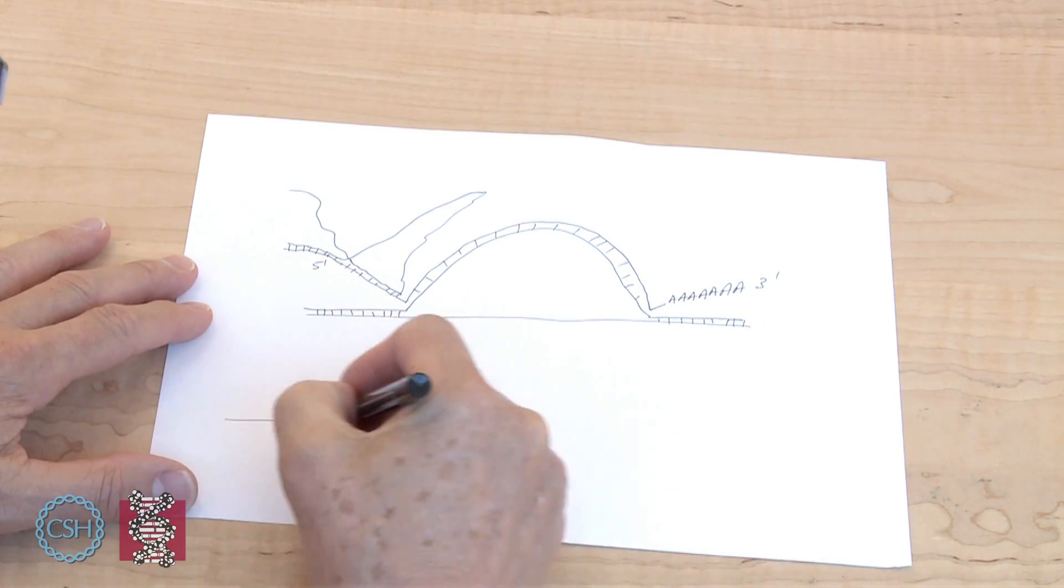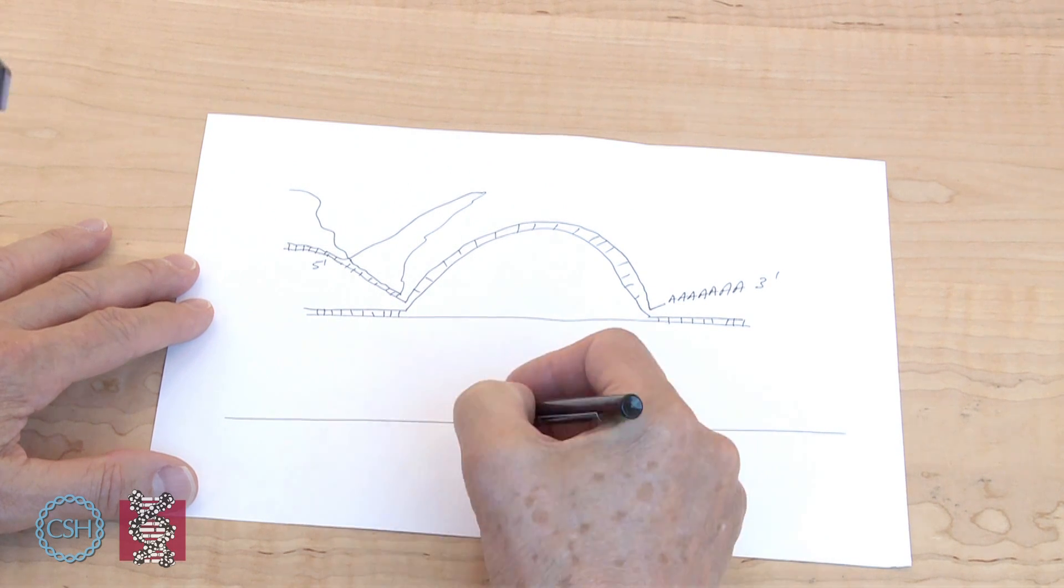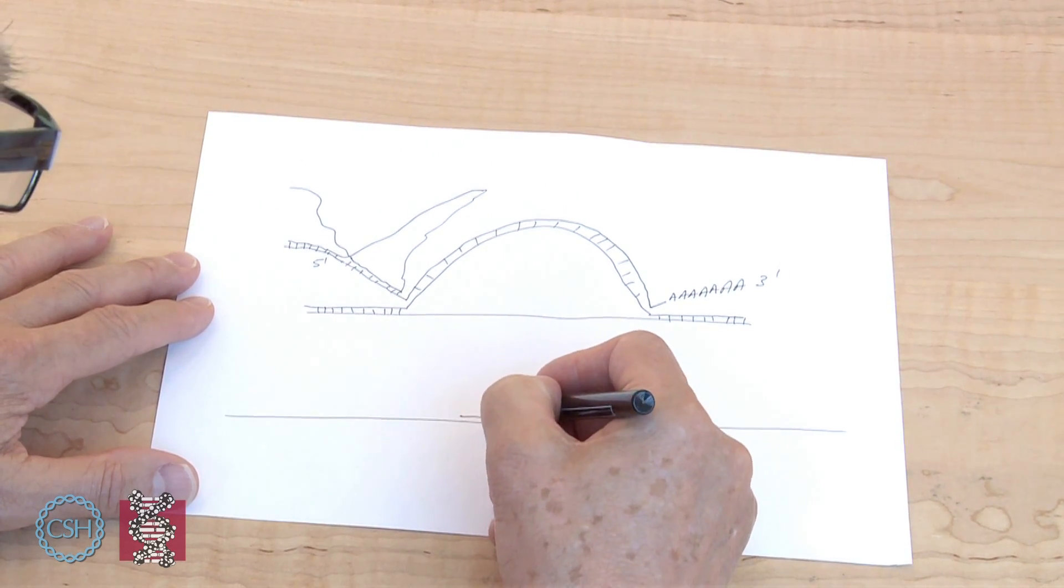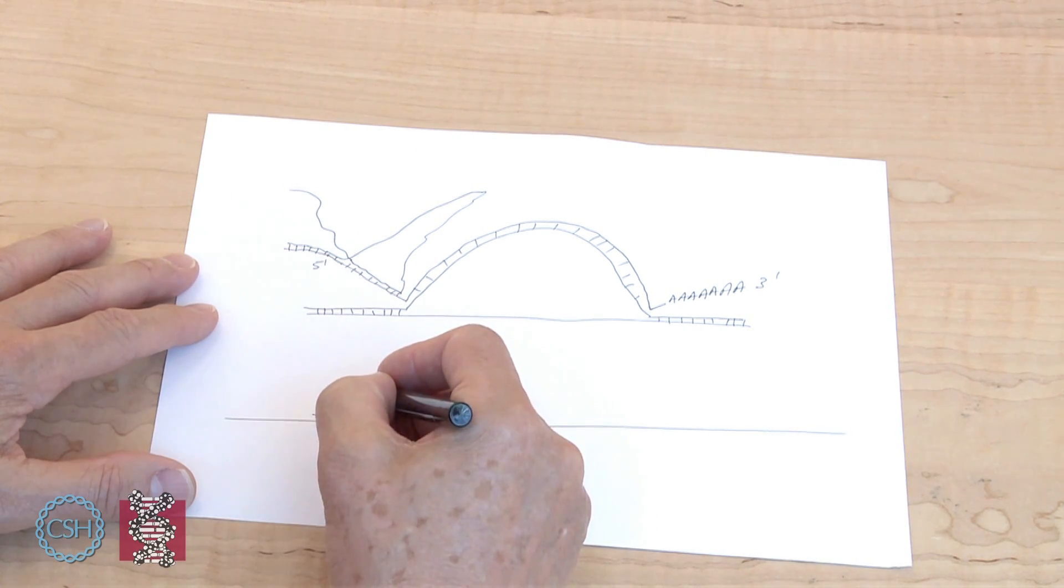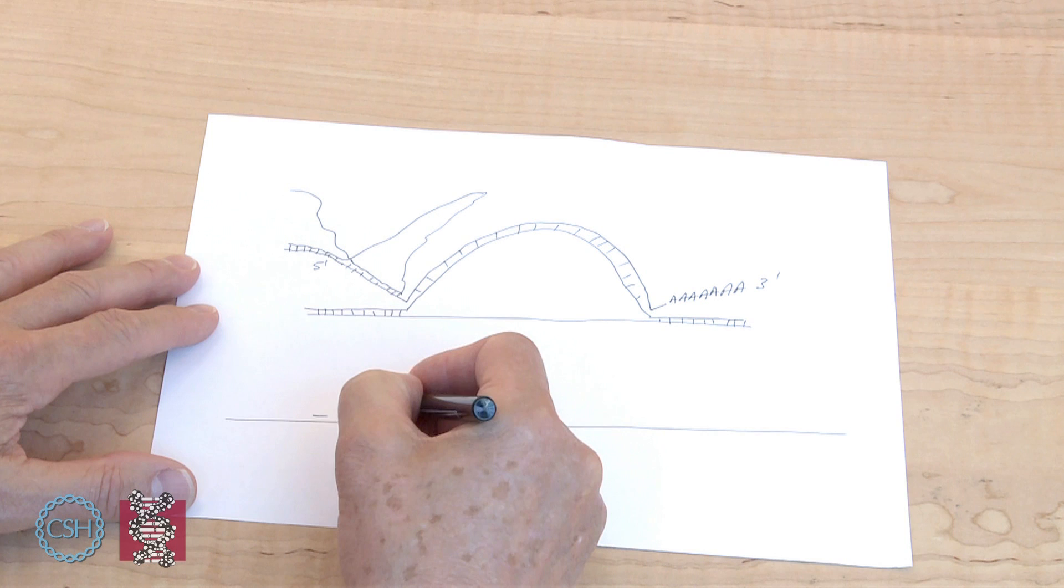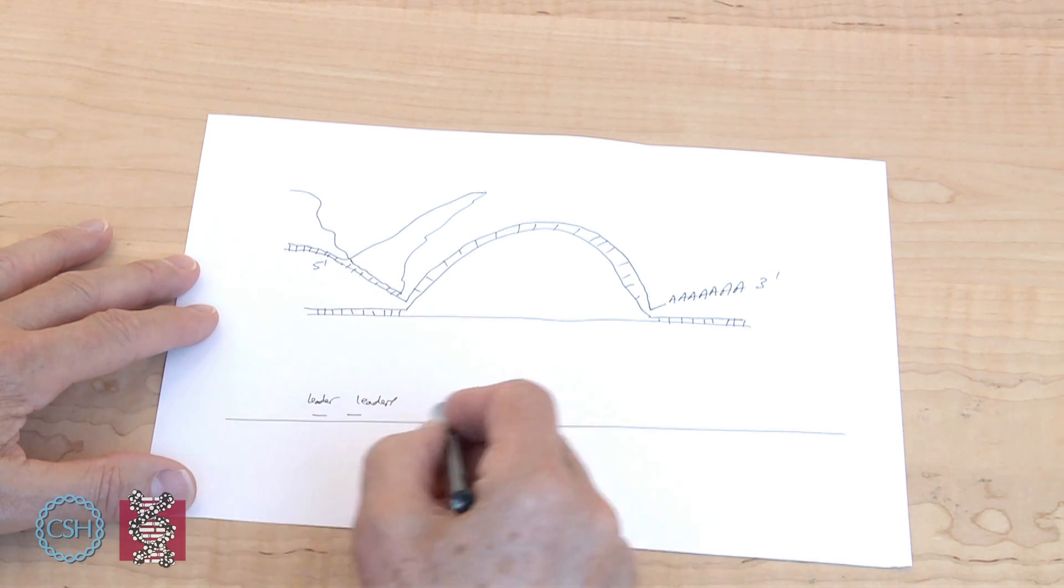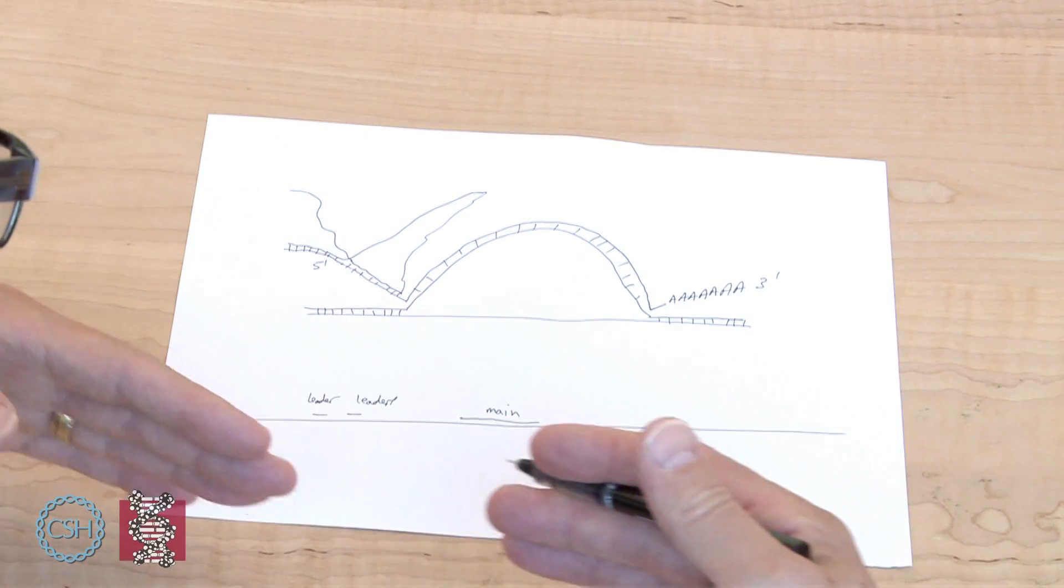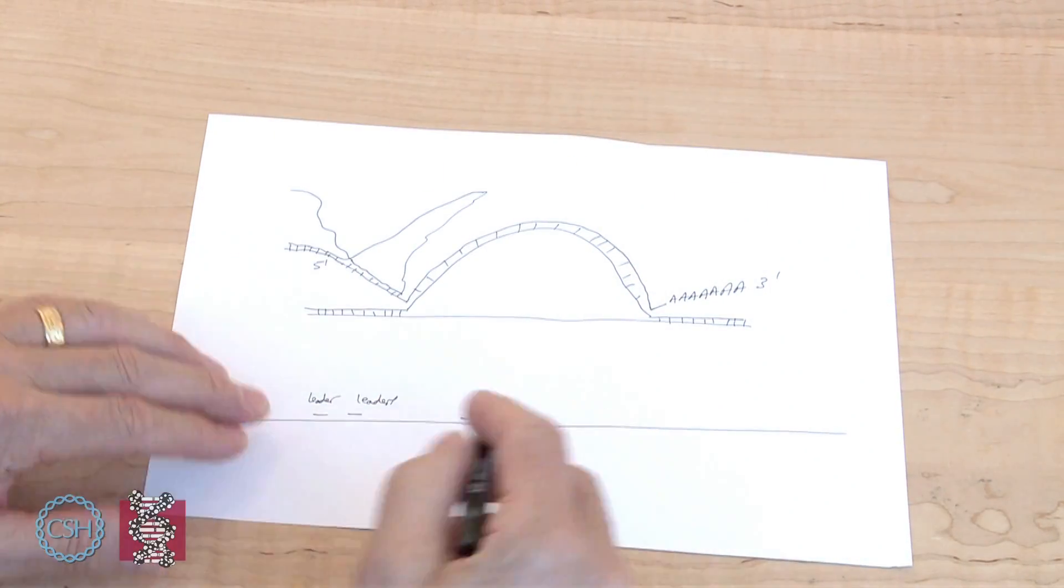And so if we draw a linear adenovirus genome, we've got this as the main body of the messenger RNA. And down here, there were actually two pieces, which we call leaders. And here was another leader. And these three things had somehow all become joined together. And that's what this diagram was showing as they all come together.